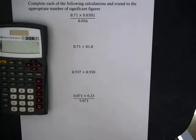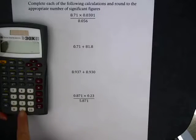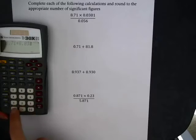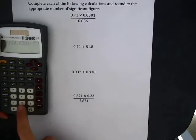Okay, here I'm just going to practice putting some numbers in my calculator and rounding to the correct number of significant figures. So the first one I'm multiplying 8.71 times 0.0301 and dividing by 0.056.